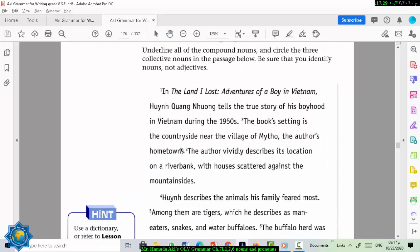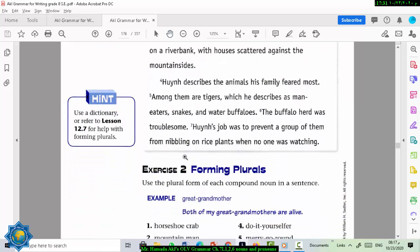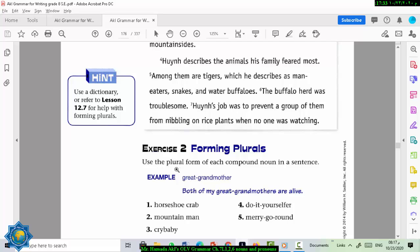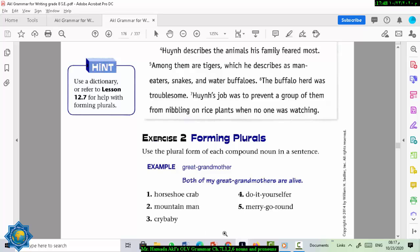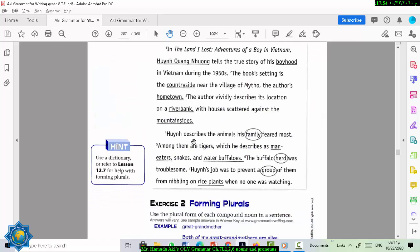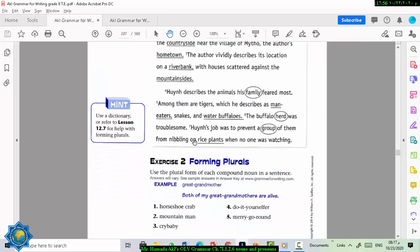Next exercise. Forming plurals. Use the plural form of each compound noun in a sentence here. Great grandmother. The plural form will be great grandmothers with an S added to the mothers because that's the main word. Do the same thing. Change these compound nouns into plural. Okay.